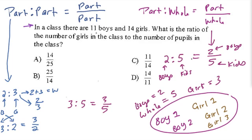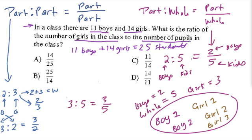in a class, there are 11 boys and 14 girls. So let's do that right now. How many kids are there? Well, 11 boys plus 14 girls equals 25 students. So we're assuming that's all the kids in the class. There are 25 students in the class. What is the ratio of the number of girls in the class to the number of pupils, or that's students, in the class? So they're asking you for a part-to-whole ratio.